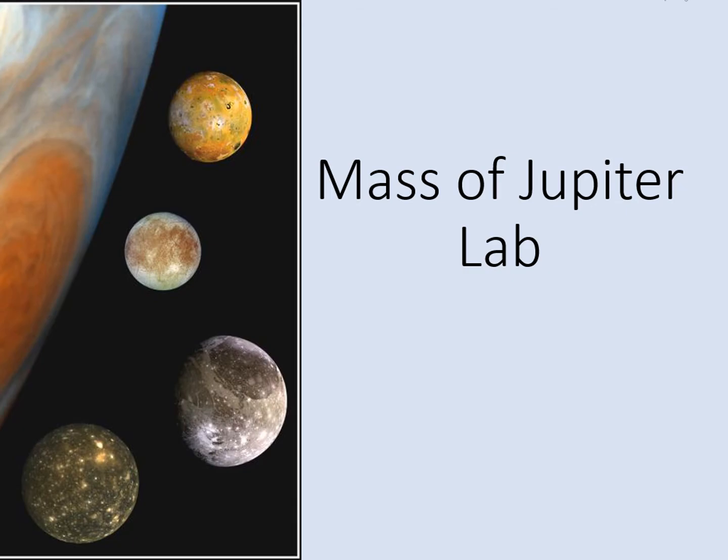Welcome to the tutorial for the Jupiter's Moons Lab. In this lab we're finding the mass of the planet Jupiter from the orbits of several of its moons. This is a specific example of one of the most widely used types of measurement in astronomy: looking at the orbits of bodies to find the masses of the things they orbit.